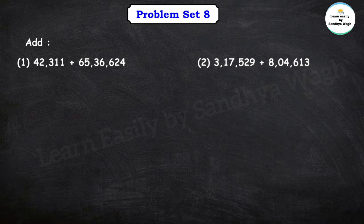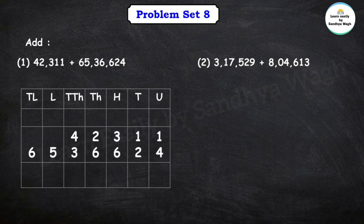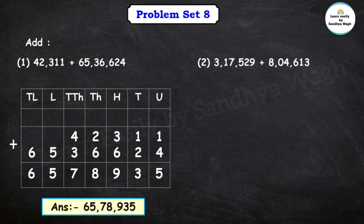Our first question is 42,311 plus 65,624. Let's add these numbers: 1 plus 4 is 5, 1 plus 2 is 3, 3 plus 6 is 9, 2 plus 6 is 8, 4 plus 3 is 7, and this is 6. So our final answer is 65 lakh 78,935.